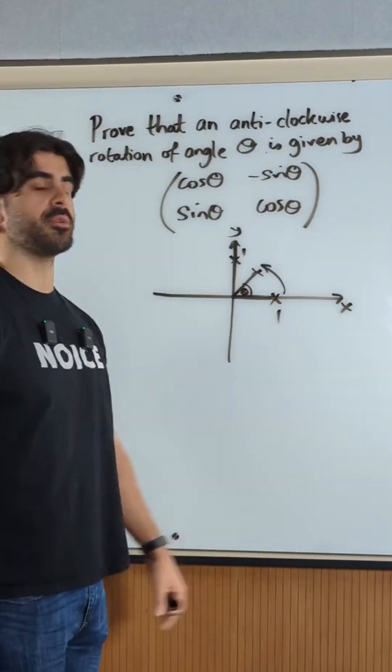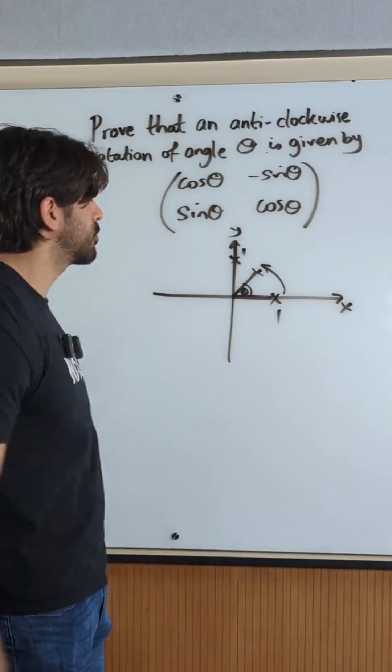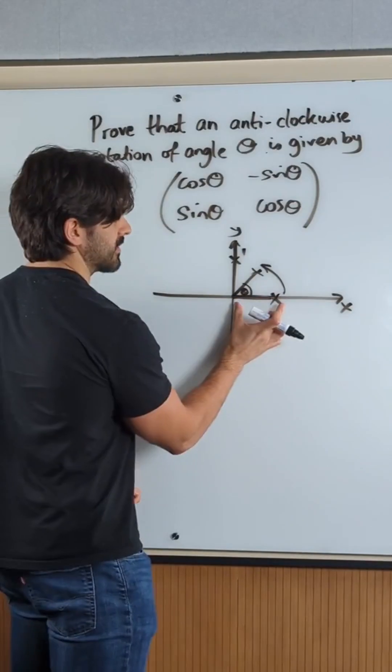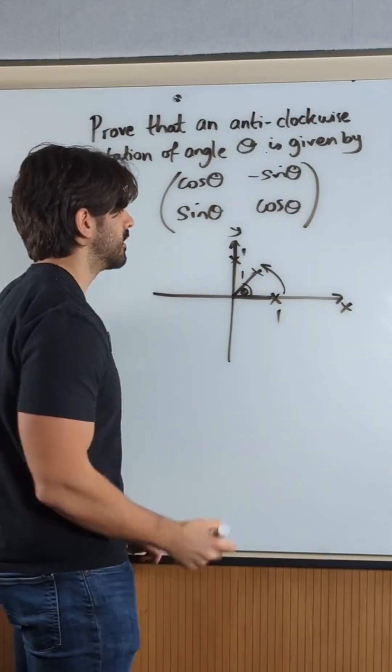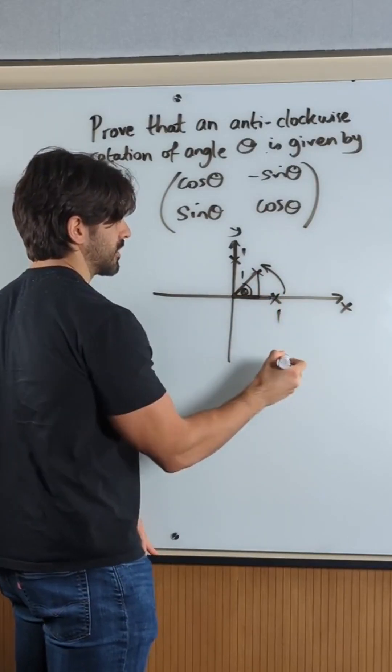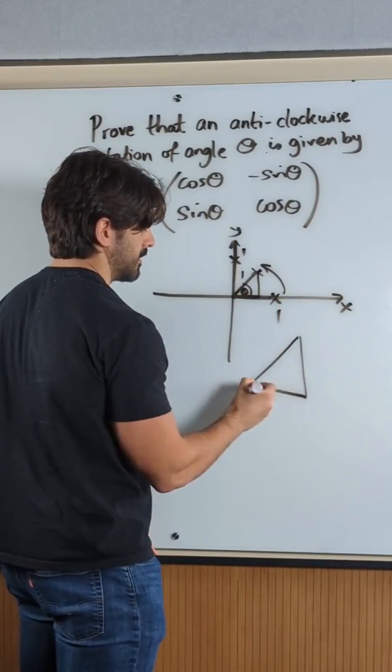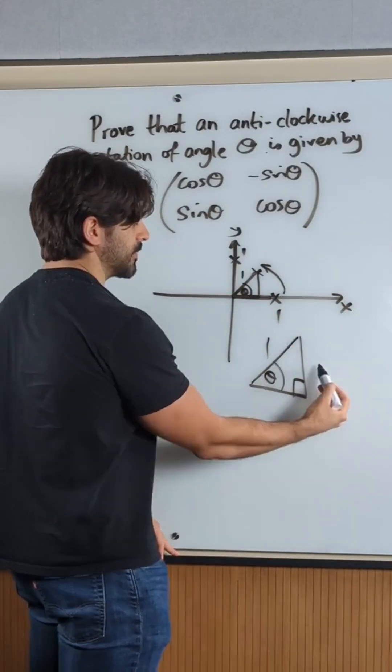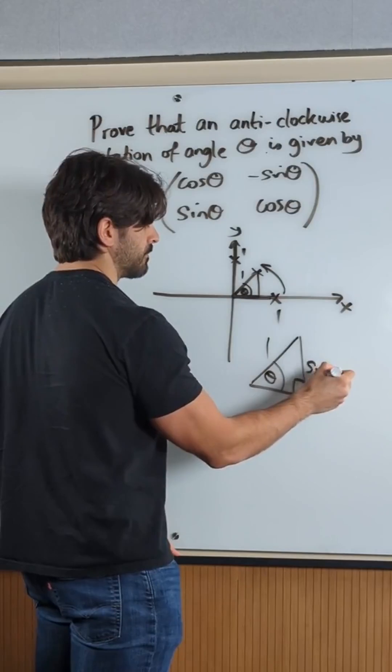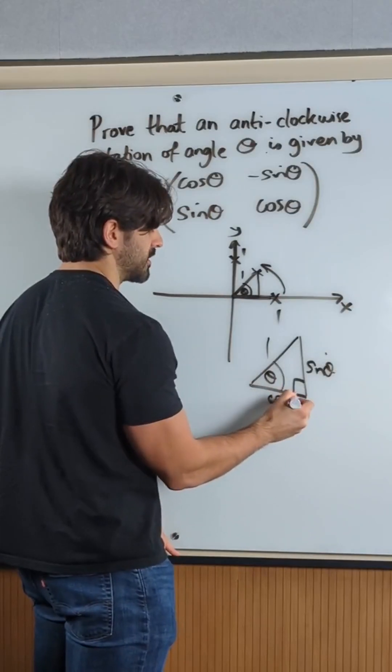All we need to do is read the new coordinates. Remember this length is 1. So this length is also going to be 1. We're going to form a right-angled triangle like this. The opposite side will be sine theta. The adjacent side will be cosine theta.